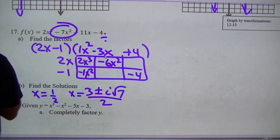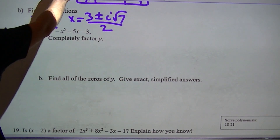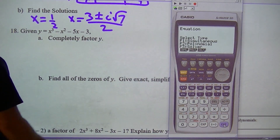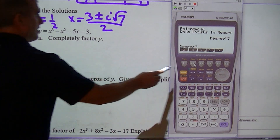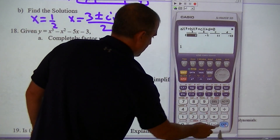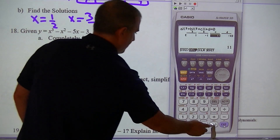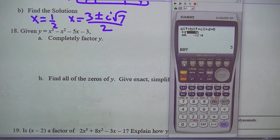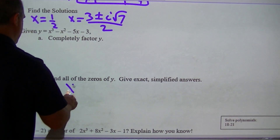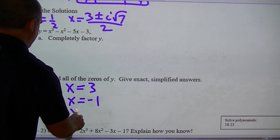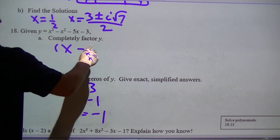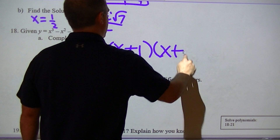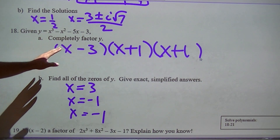Question 18: go to menu, Equa, Polynomial. Type in 1, negative 1, negative 5, negative 3. My zeros are x equals 3 and x equals negative 1 twice. So as factors, that's (x minus 3)(x plus 1)(x plus 1). I'm good — I've got all those to convert.